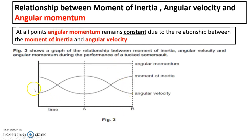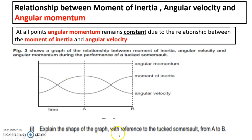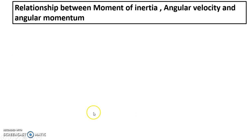You can see here, for example, it's talking about a tucked somersault. So that would be the start point, then you go into the actual tuck. This is starting here — at this point the angular velocity is low because the moment of inertia is high in the opened out position before you do a somersault. Last year they got this exam question: explain the shape of the graph with reference to the tuck somersault from A to B. I'm going to show you this in visual terms, which I think will be easier.